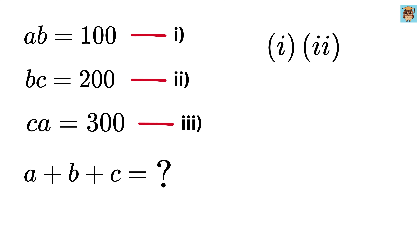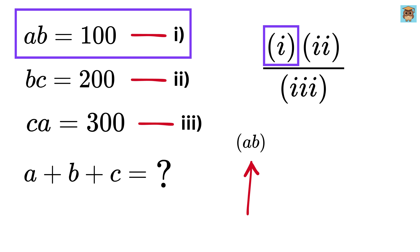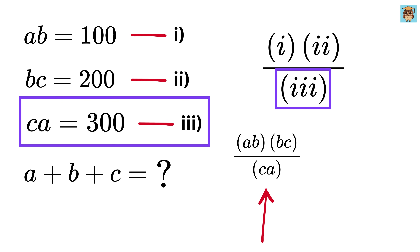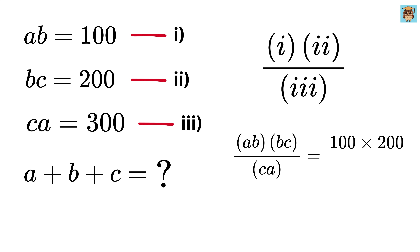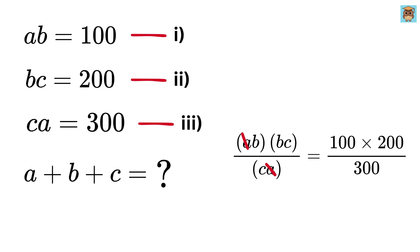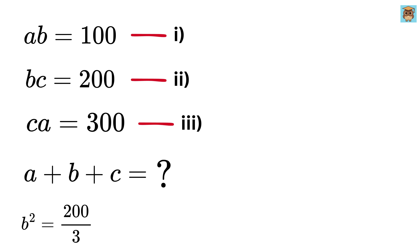To solve this, I will multiply equation one with equation two and divide by equation three. We get ab times bc divided by ca equals 100 times 200 over 300. A will get cancelled out and c will also get cancelled out, and we are left with b squared, which equals 200 over 3.